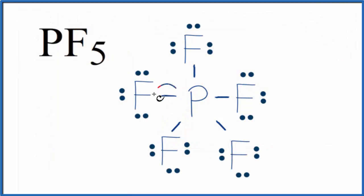What that means is that the electrons in this bond, the pair of electrons, are going to spend more time around the fluorine atom. So each one of these bonds is a polar bond.